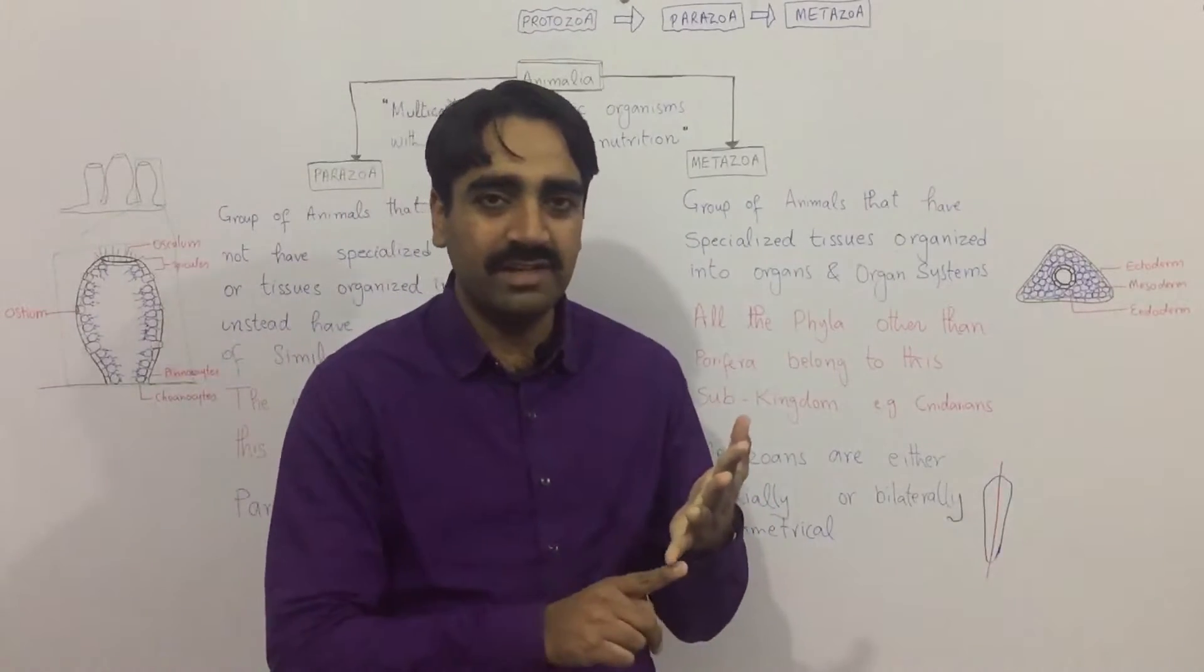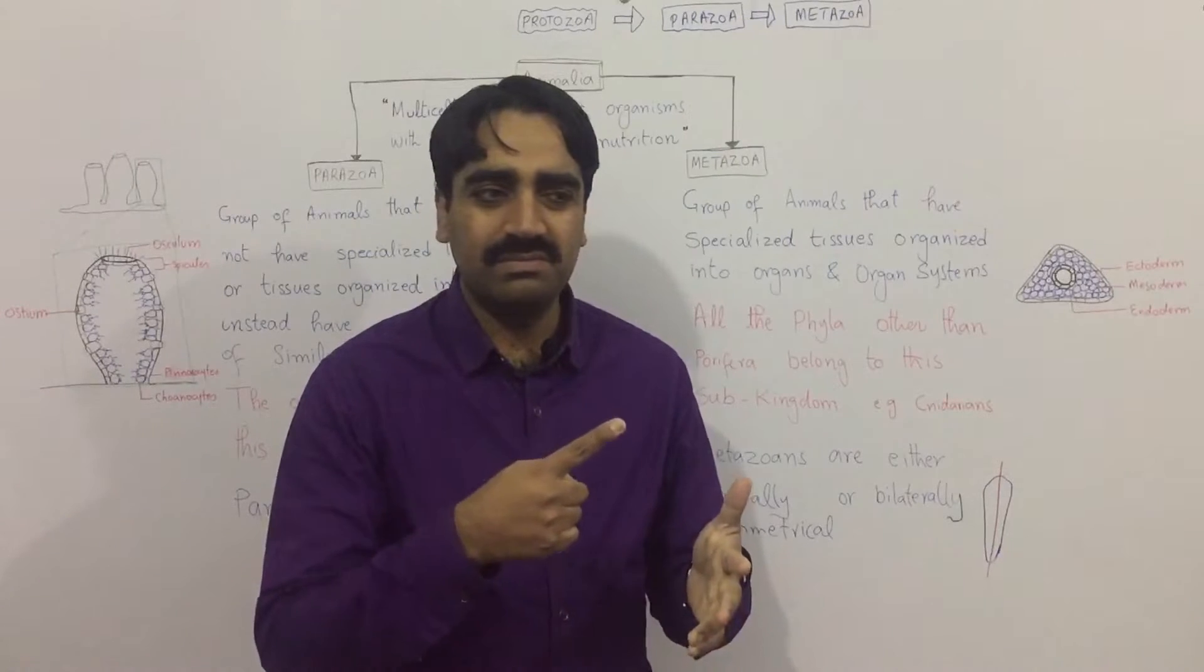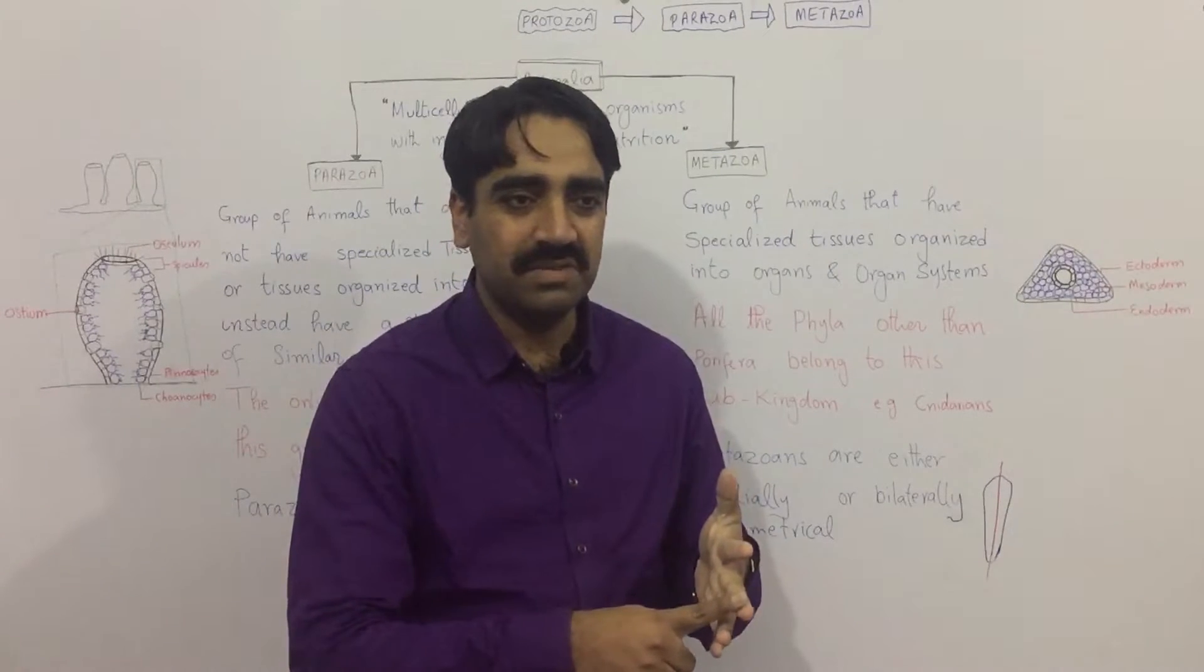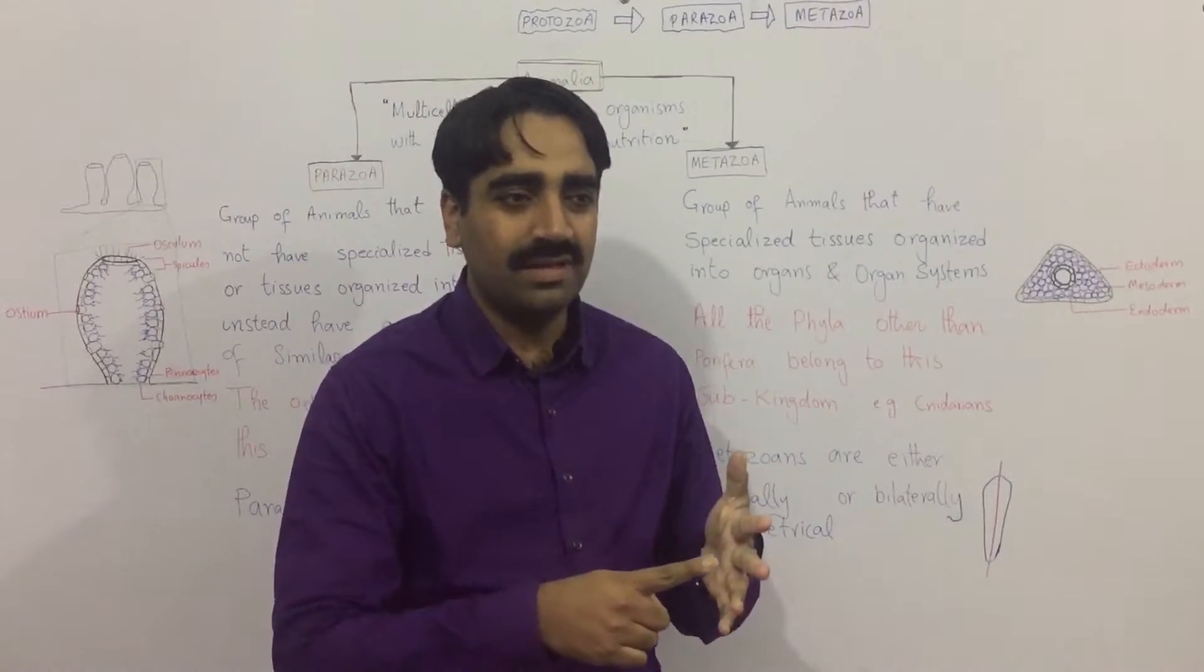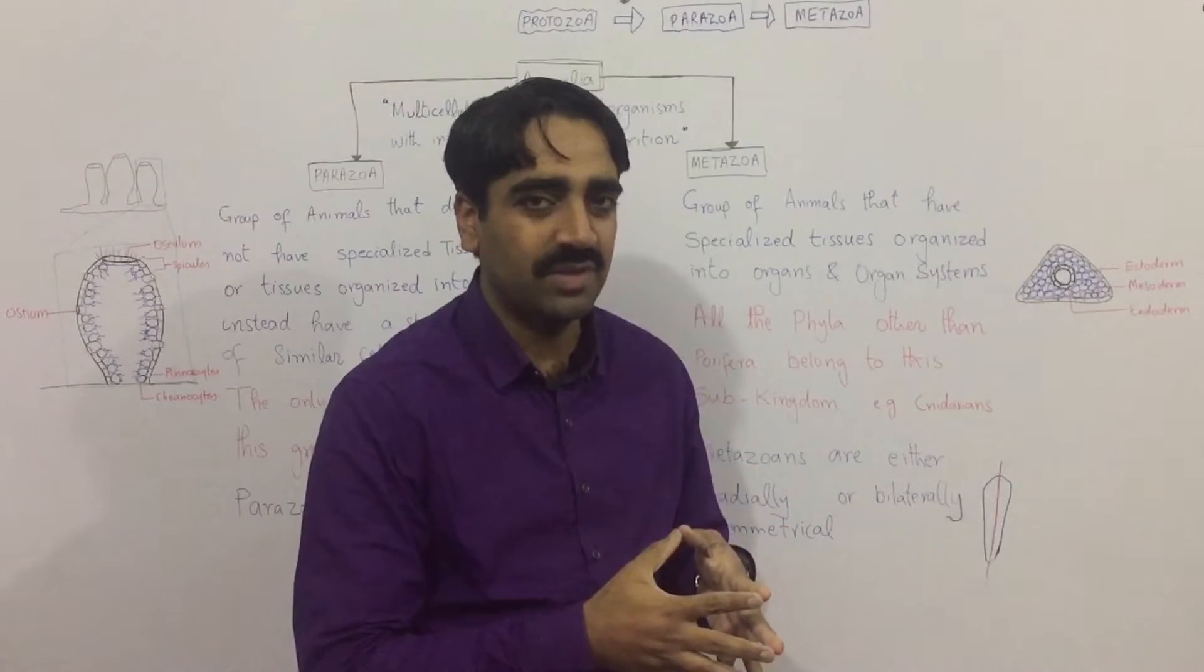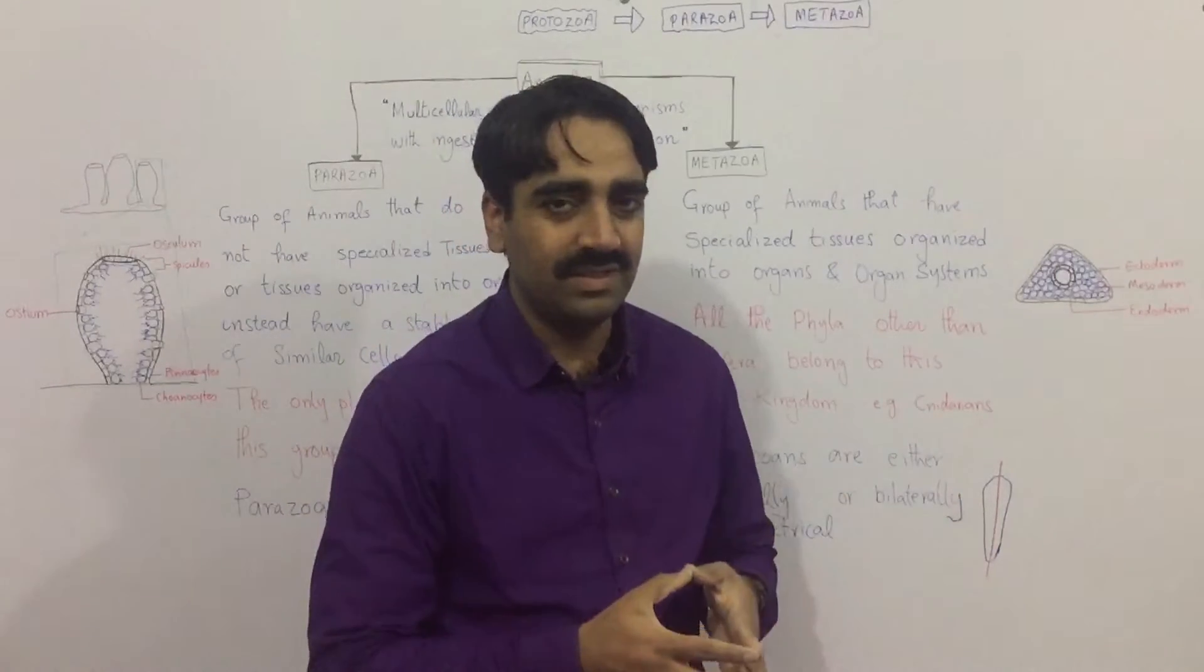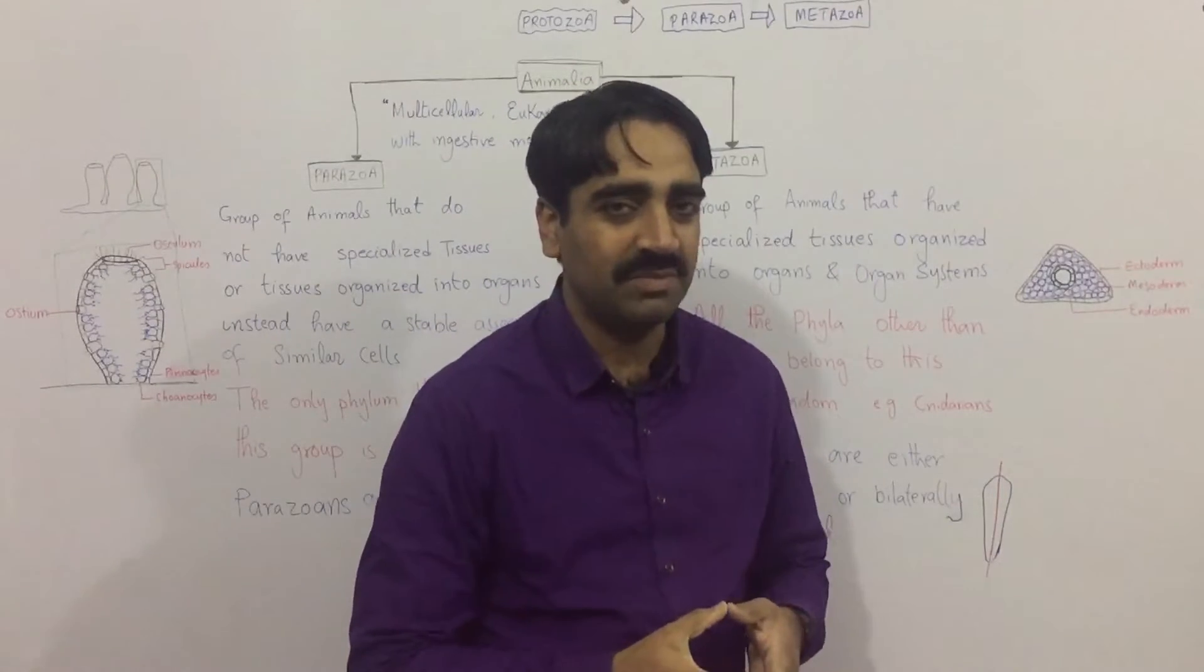Aschelminthes, the annelids, arthropods, mollusks, echinoderms, and eventually the phylum Chordata—all the phyla, all the groups of the phylum Chordata.